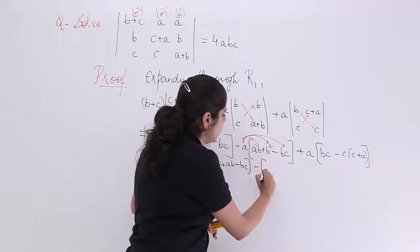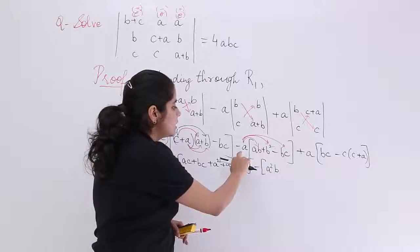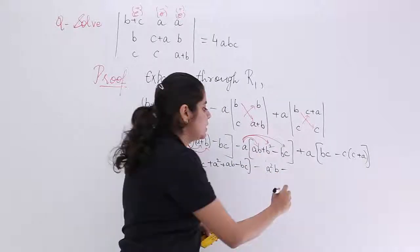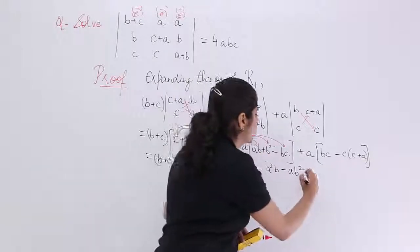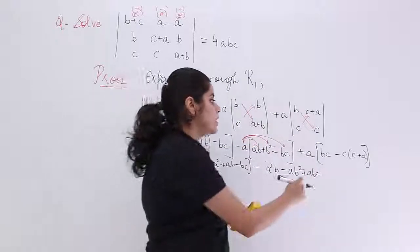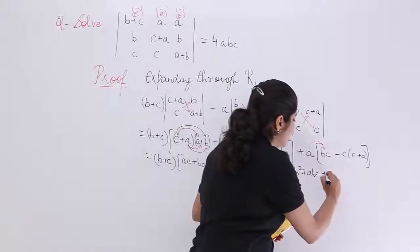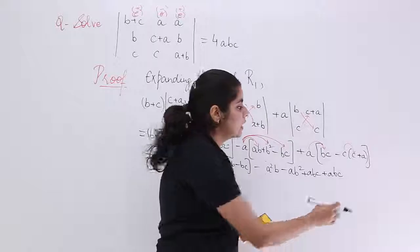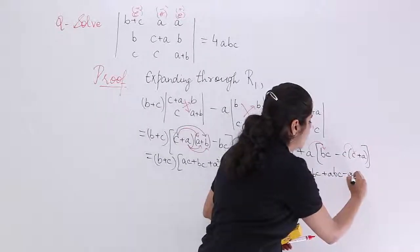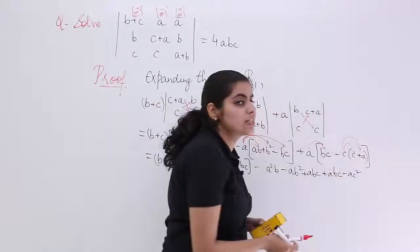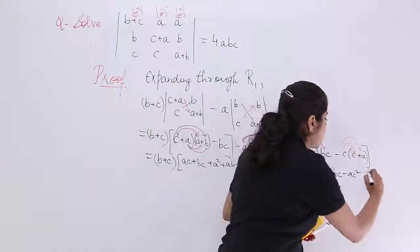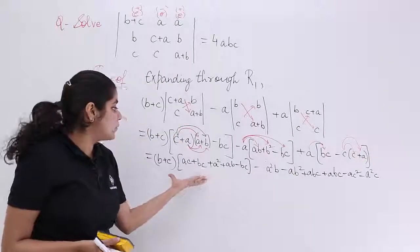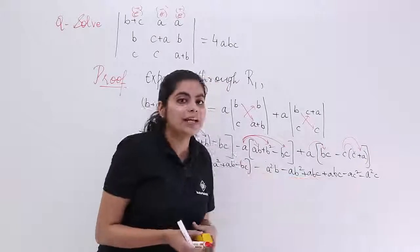Expanding (b+c) into the first bracket: a²b, then minus ab², then plus abc. Continuing with the second term: −a(ab + b² − bc) gives −a²b − ab² + abc. For the third term: +a(bc − c² − ac) gives +abc − ac² − a²c. Checking for cancellations among the current terms — since all are unlike terms, we must expand the remaining brackets as well.